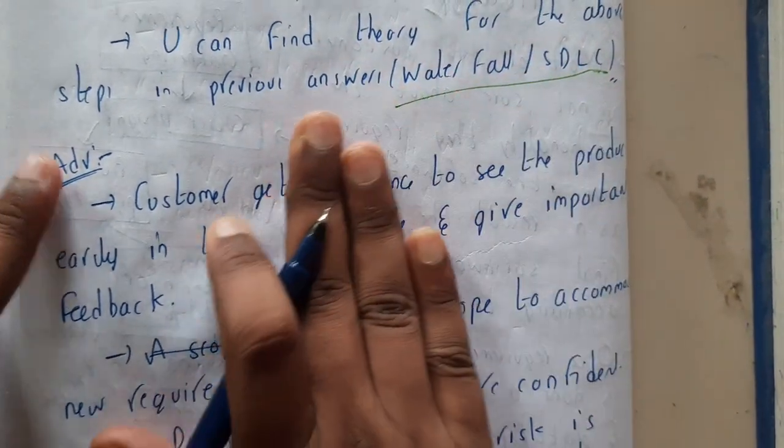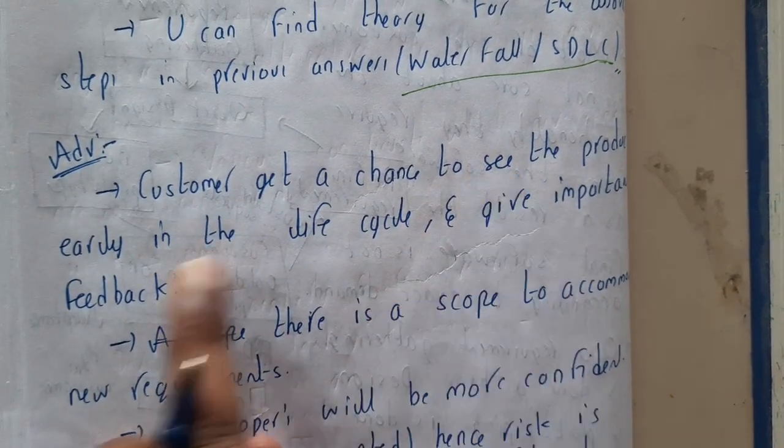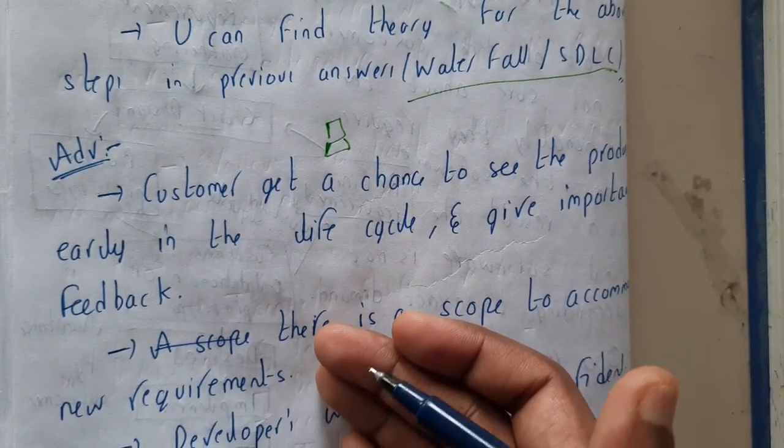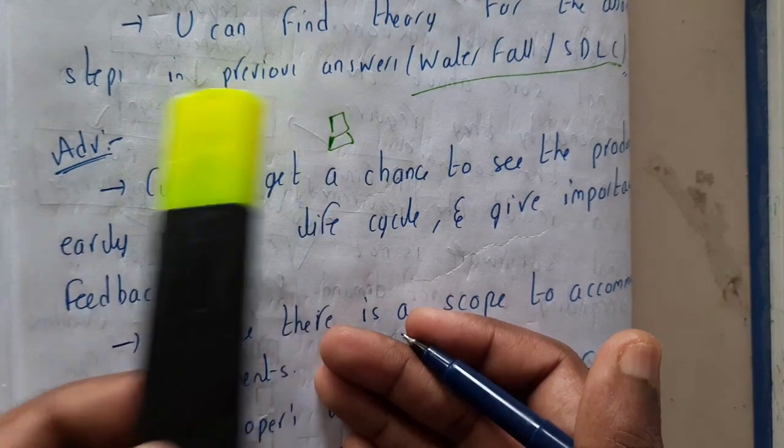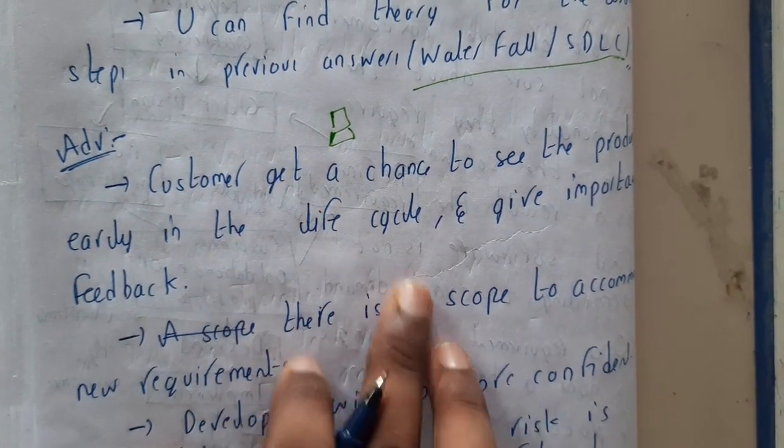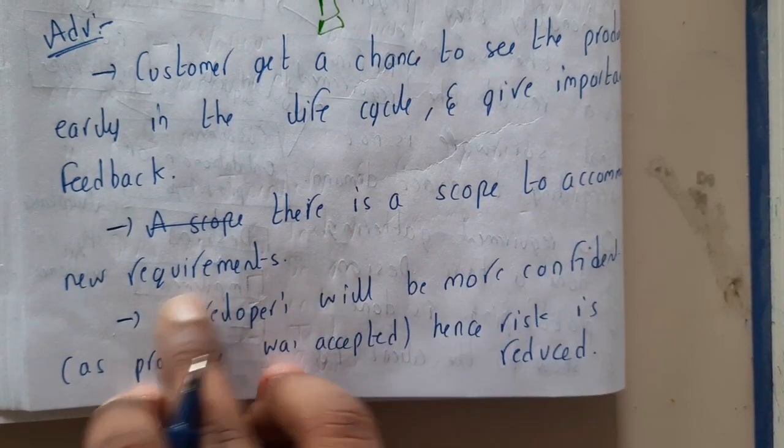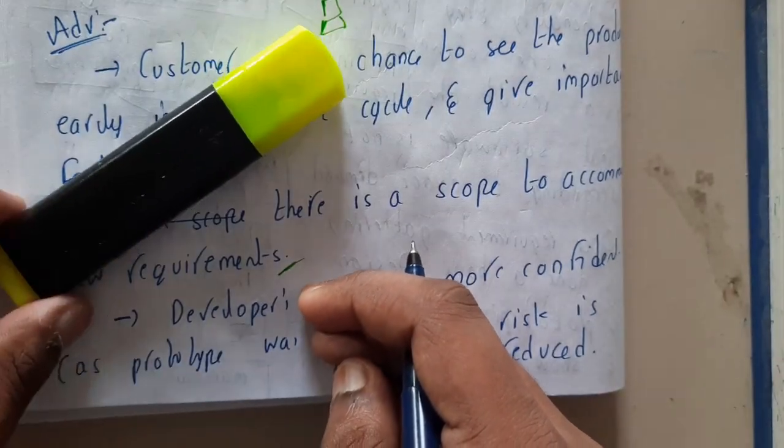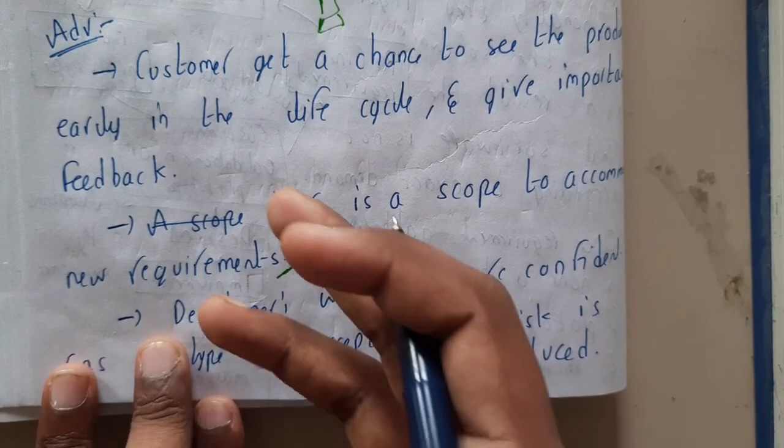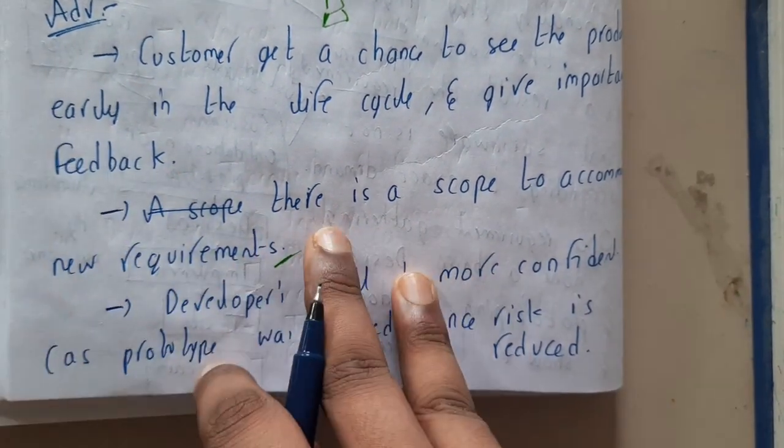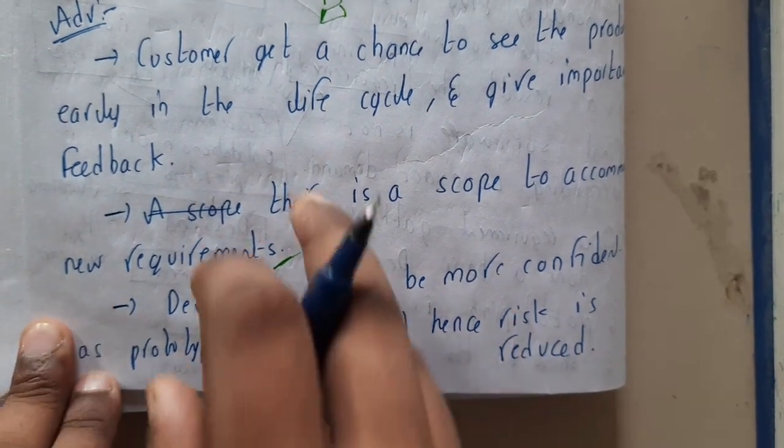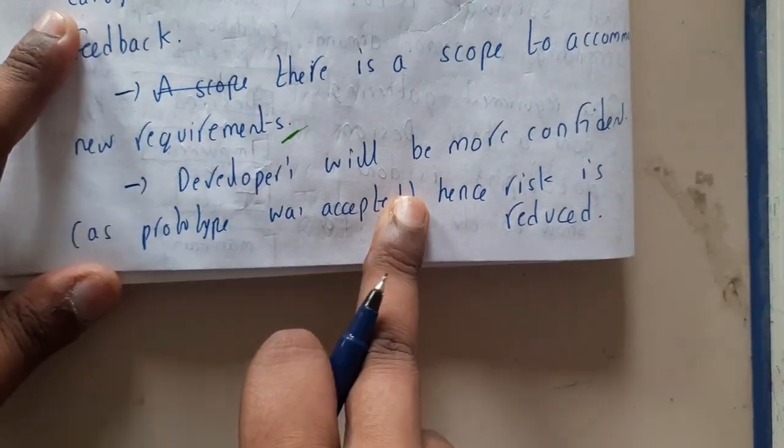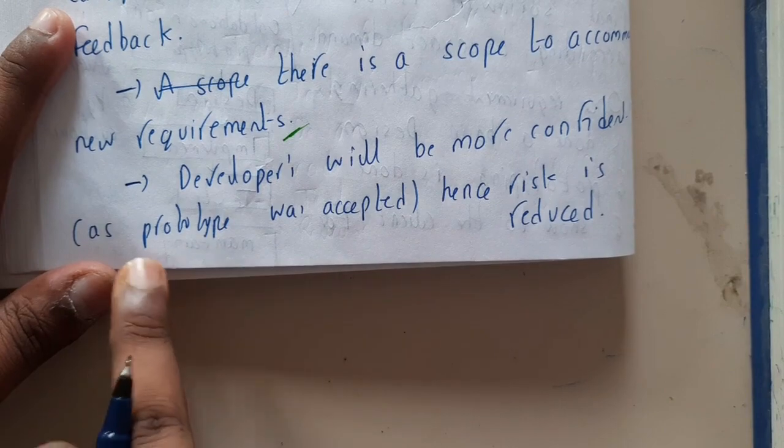The main advantage of this prototype model is customer gets a chance to see the product earlier. Basically when someone will be seeing the product when it is a final product, right? This is a marker. At the end you will be getting the marker. We will not be creating any prototype previously but now we are making some prototypes. Similarly there is a scope of accommodation of new requirements. Assume that you designed the marker in a different way and now the client told that he wants some other way of marker or some other shape or back end shape, some other cap design or anything. In those situations those kind of requirements can be gathered. I am saying in terms of product, you can assume it in terms of software also.